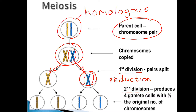These chromosomes are still doubled, so that's why the cell goes into its second division where the chromatids separate from each other, and we end up with four cells. The four cells have half the number of chromosomes — in other words the four cells are haploid. And look at them: they are different. Variation occurs.